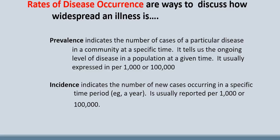This next set of words relates to how we report the rates of disease occurrence. The two main ways are prevalence and incidence. Prevalence indicates the number of cases of a particular disease in a community at a specific time — it gives an ongoing measure of the level of disease in a population, usually expressed per 1,000 or 100,000 people. Incidence, however, indicates the number of new cases occurring in a specific time period, usually measured in a year.